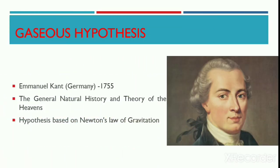Immanuel Kant is a Prussian philosopher who brought out this theory in the year 1755. He presented his hypothesis in his treatise entitled 'The General Natural History and the Theory of Heavens.' This theory is based on Newton's Law of Gravitation.